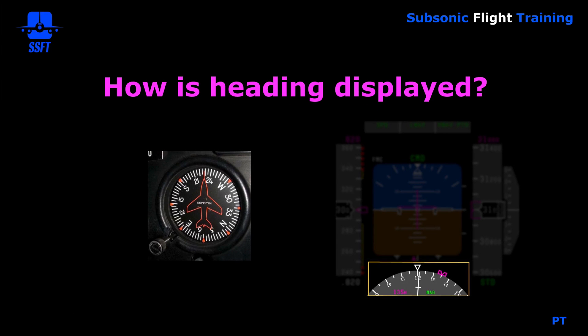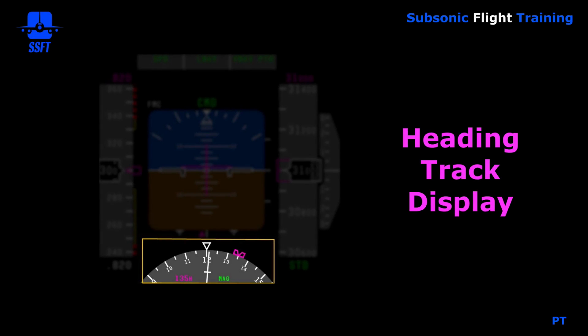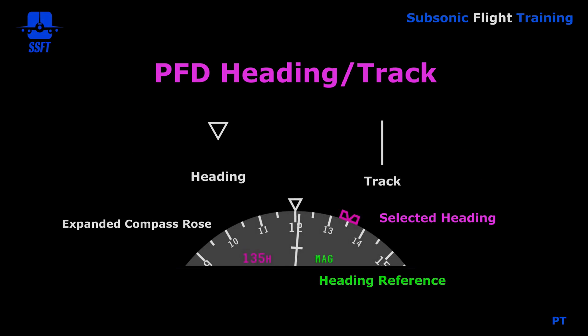How is heading displayed in a jet? In the olden days you had the round dial steam gauges. In the more modern jets you have the glass display, and the heading portion is displayed on the PFD — at the bottom of the PFD. With the heading/track indication we're looking at an expanded compass rose, usually about 70 degrees from side to side. The heading is denoted by an upside-down triangle, and there is a white line that represents track.